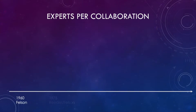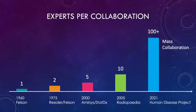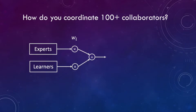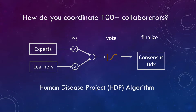Unlike previous revisions that involve small collaborations, the Human Disease Project will coordinate the efforts of more than 100 expert radiologists for each differential diagnosis, including residents, fellows, and attending radiologists. To coordinate this effort, the HDP algorithm combines recommendations from experts and learners in a multi-layer weighted process similar to the architecture of deep neural networks.